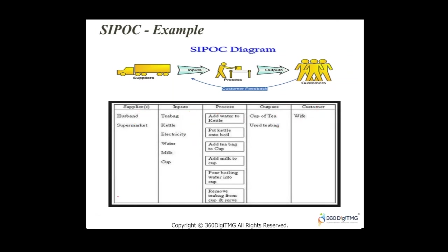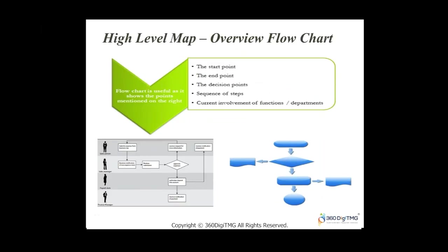The key outputs of the Define phase are: an approved project charter — most often approved by your stakeholder and sponsor, who is the person giving you money and resources. You also come up with a high-level process map — SIPOC: Supplier, Input, Process, Output, and Customer — and an overview flowchart. With that, the team is ready to move to the Measure phase.